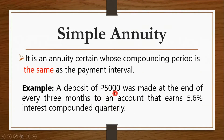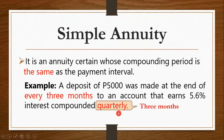For example, a deposit of P5,000 was made at the end of every three months to an account that earns 5.6% interest compounded quarterly. Every three months is the payment interval, and the compounding period is quarterly, which is also every three months. This is an example of simple annuity since the payment interval and the compounding period both coincide at every three months.